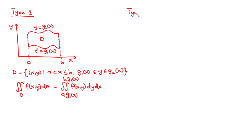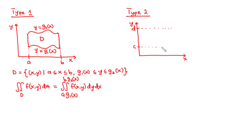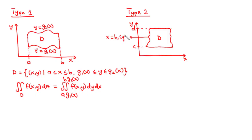Now let's move on to the type 2 region. We also have the xy-plane with the y-axis and x-axis. We have c and d along the y-axis creating horizontal boundaries. We have the graphs of two continuous functions of y — the left function and the right function — enclosing the region D.